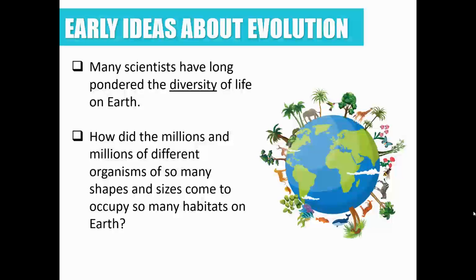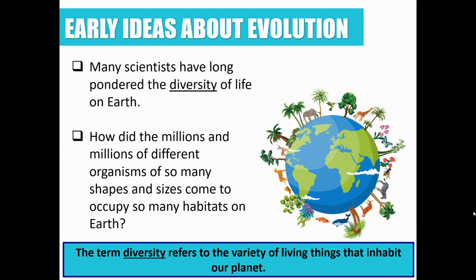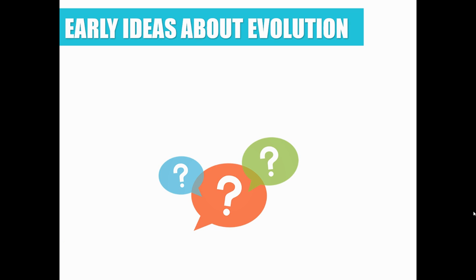Scientists have long pondered the diversity of life on Earth. They have asked themselves for centuries how the millions and millions of different species and organisms of all varieties came to inhabit this place we call Earth. Anytime we're talking about diversity, we're just referring to a variety of different things that inhabit our planet — all the things that show up on planet Earth.